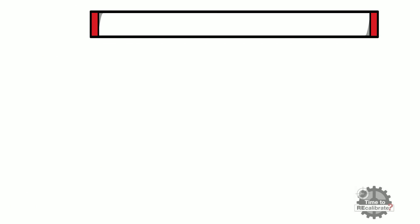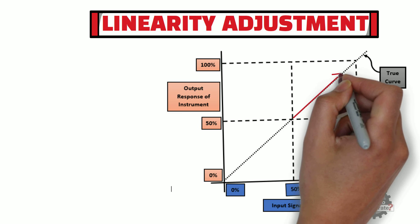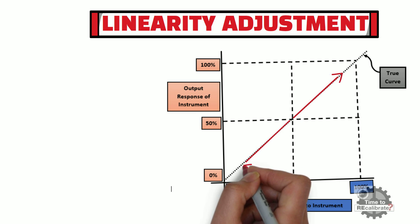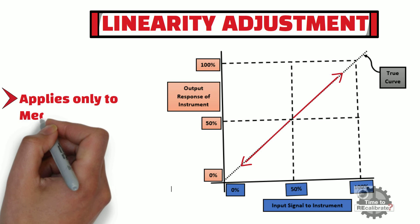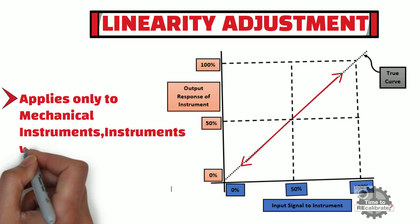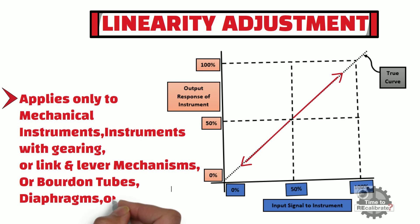Lastly, let's understand the concept of linearity adjustment. Linearity adjustment is used to set equal travel above and below the 50% mark on the instrument range. This adjustment generally applies to mechanical instruments, and instruments with gearing, or link and lever mechanisms, or Borden tubes, diaphragms, or bellows.